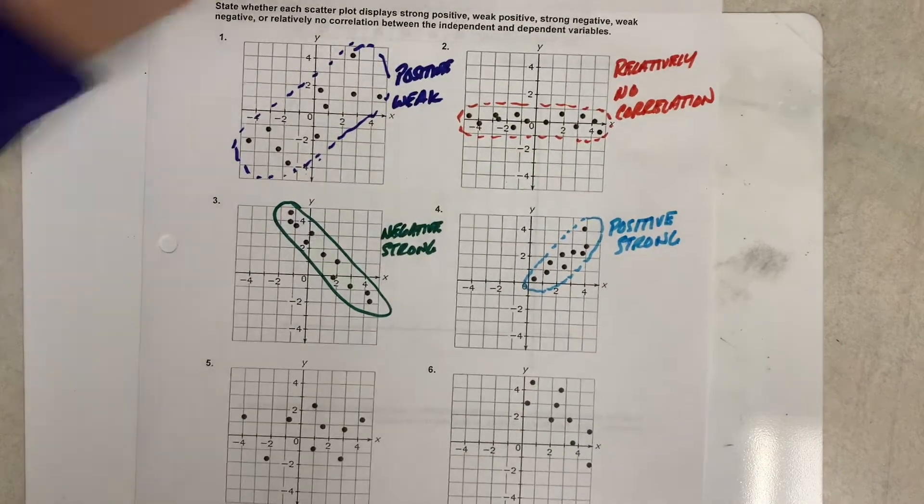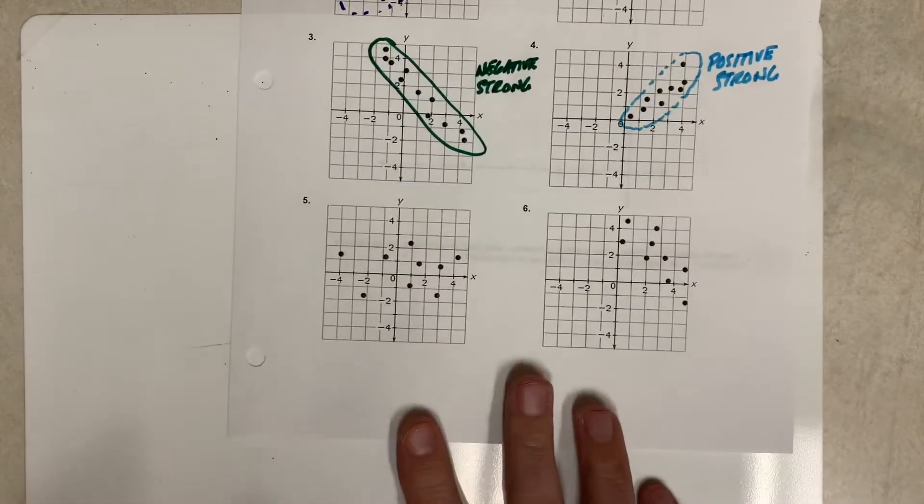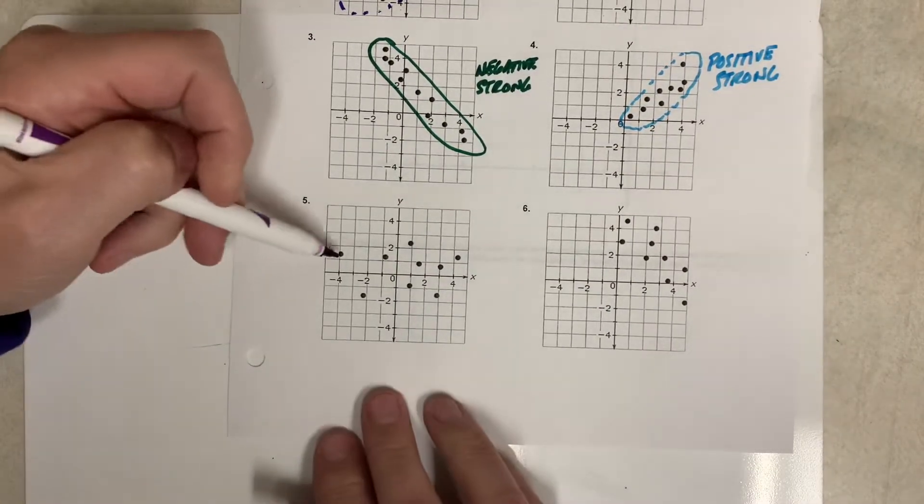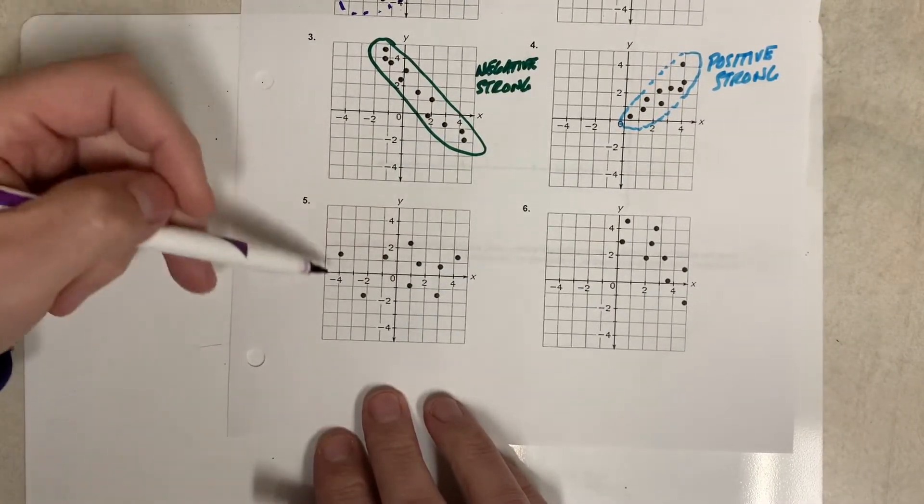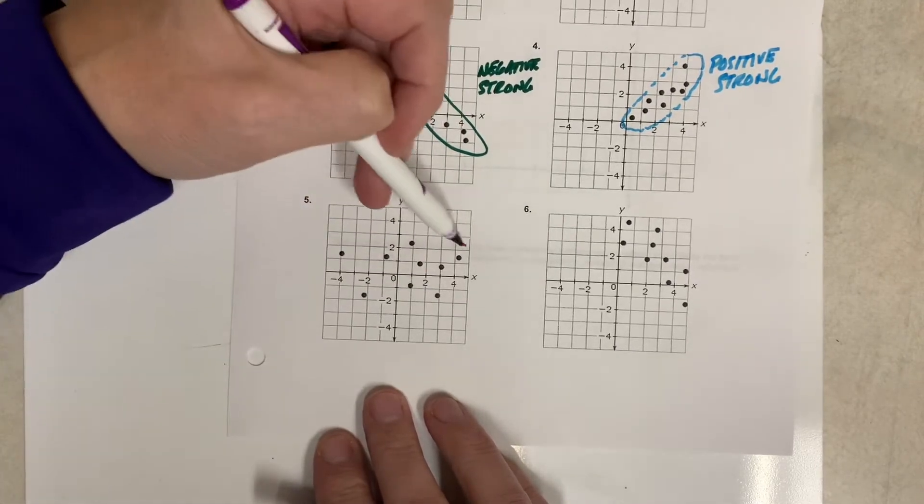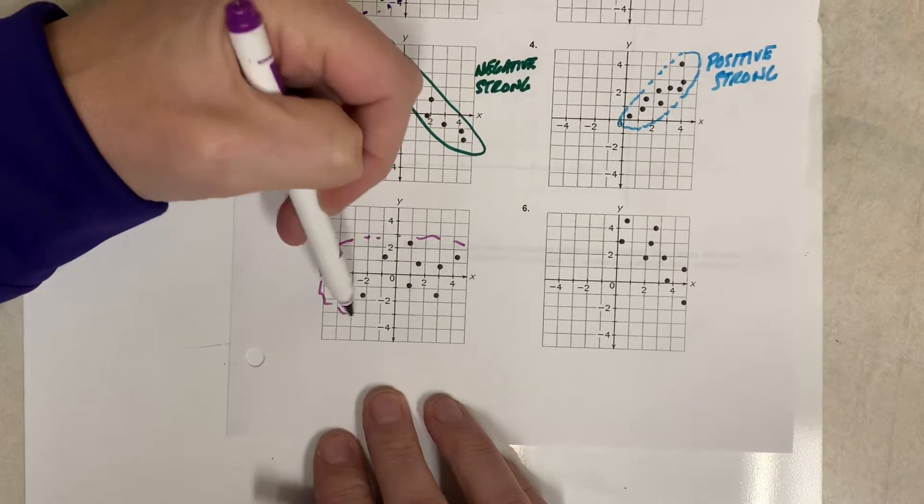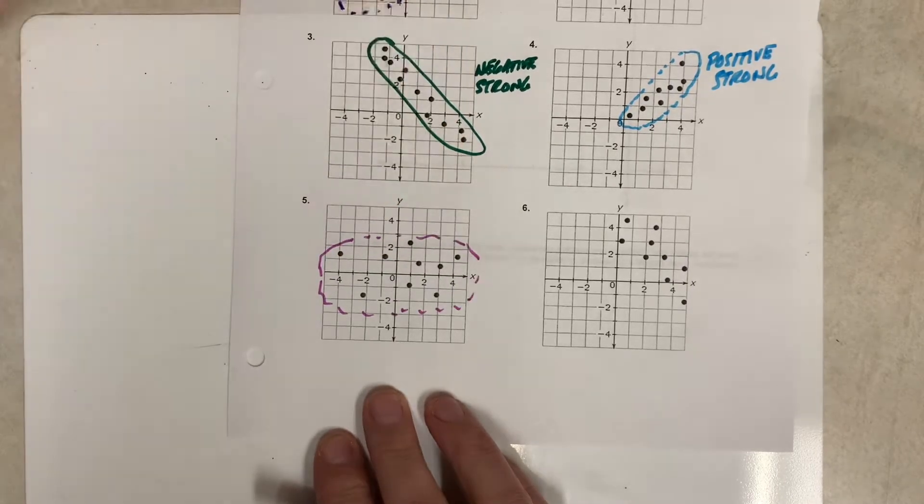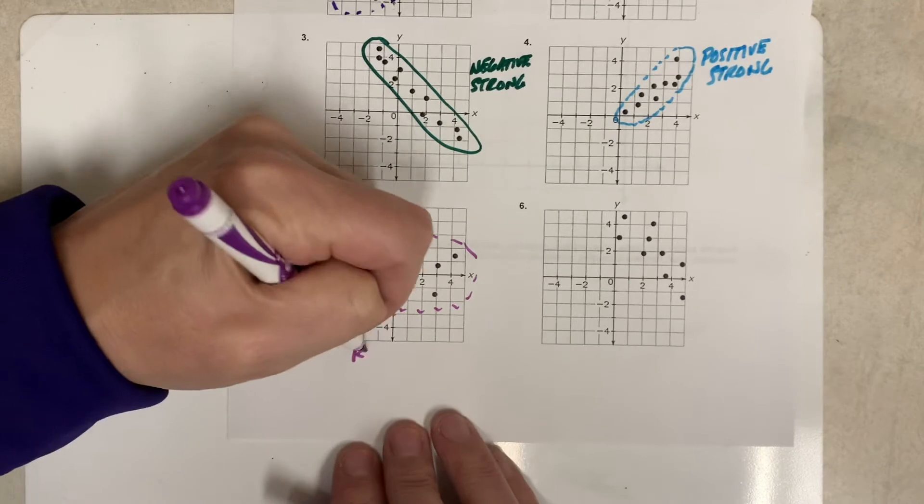All right, then we look at number five, and number five, the dots kind of randomly are scattered. There's not really any upward or downward trend. If I look at them, they're kind of just all over the place like this, and for this one we would say relatively no correlation.